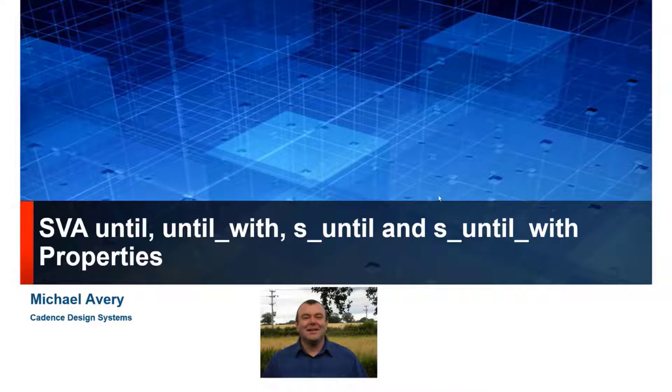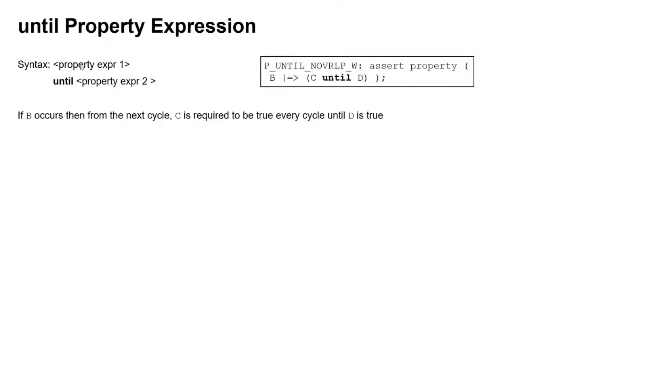Hello, my name is Michael Avery from Cadence Design Systems, and I'm going to explain the SVA properties of the until family. There's a variety of these. The basic syntax is like this: either side of the until operator is a property expression — these are the two operands — and here's an example usage.